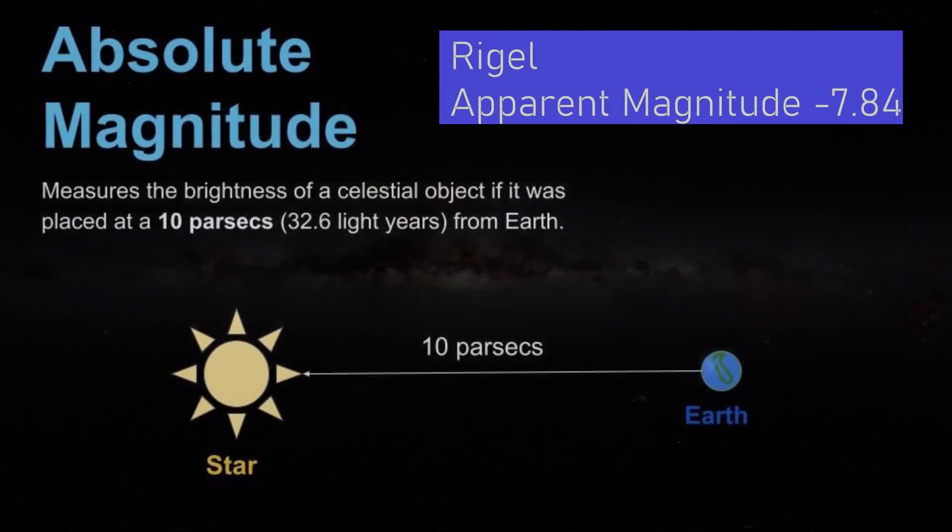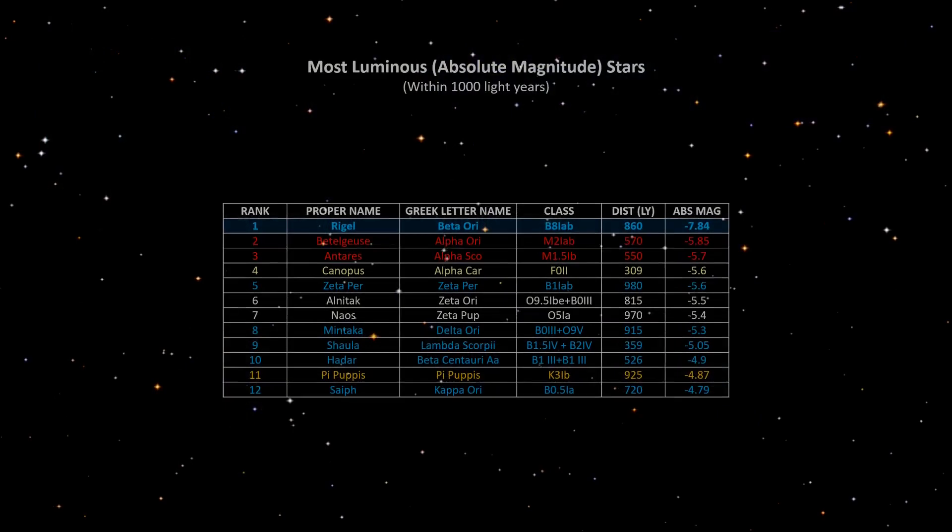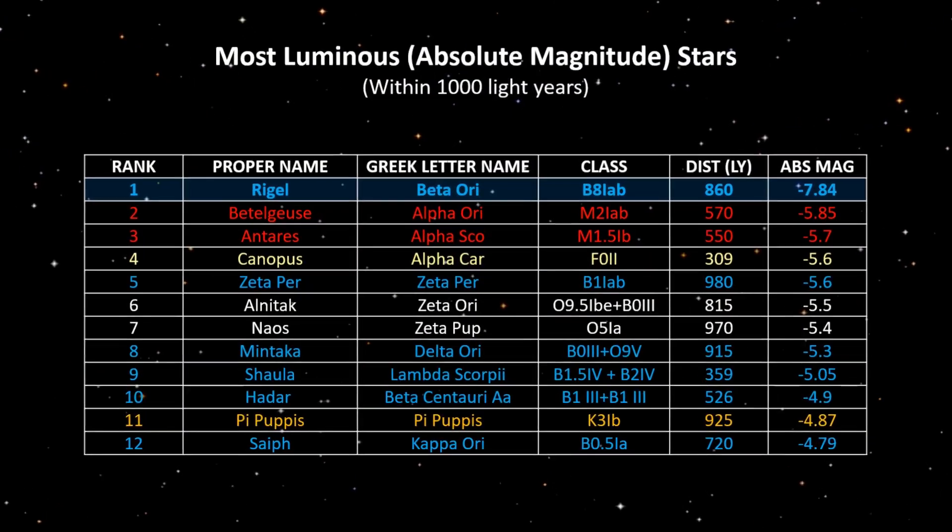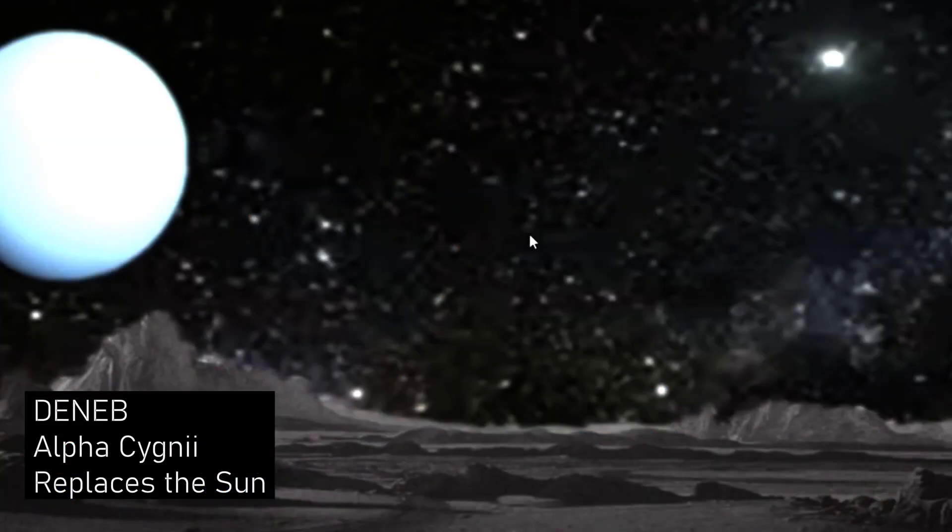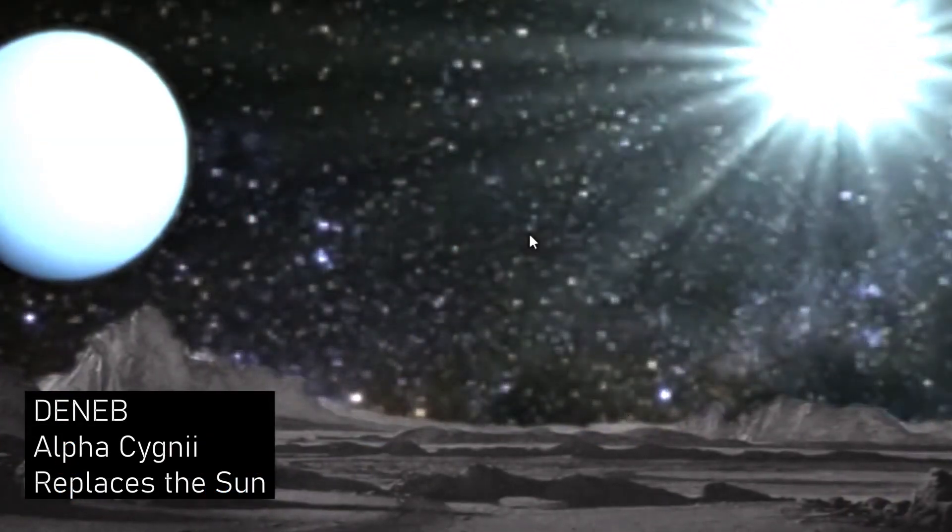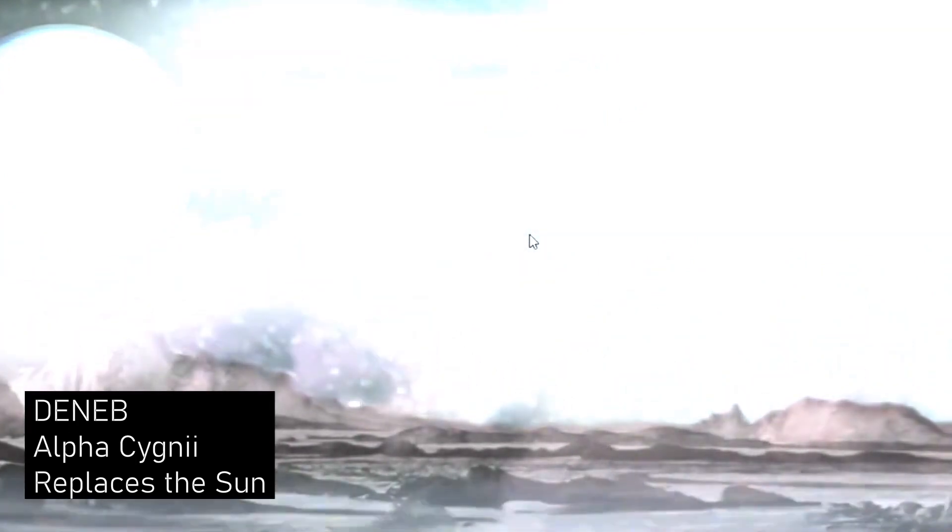The current absolute magnitude of minus 7.84, which is the brightness it would appear as if it were 10 parsecs or 32.6 light years away, is testament to its current brilliance, making it the most luminous star within 1000 light years. Although Deneb at minus 8.38 would actually overshadow Rigel in luminosity, Deneb lies beyond the 1000 light year mark. So Rigel, therefore, earns its distinction as an exceptionally radiant celestial object.